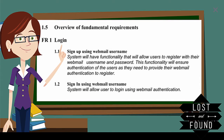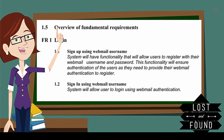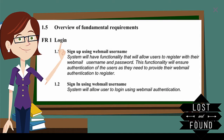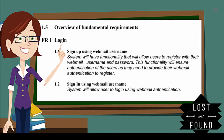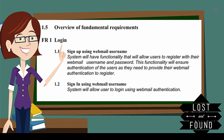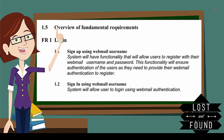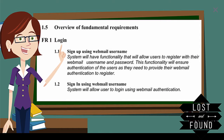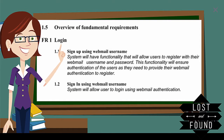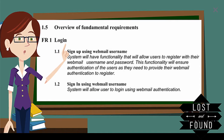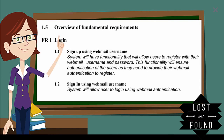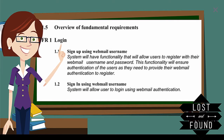The first requirement is login, which contains registration as well as the login part. The first functional requirement is sign up using the webmail username — whenever you register, our system will allow you to enter with your username already given to you by the college. The second is sign in using the webmail username. Your student ID, which is your webmail username, is provided for authentication, verified by sending a verification mail when the student provides a username and password.